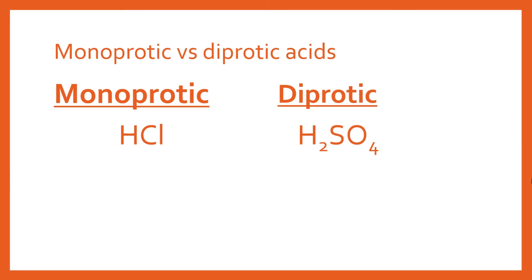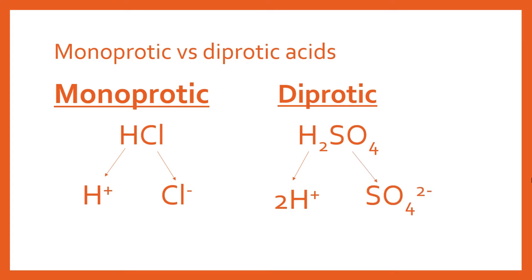A monoprotic acid could be something like HCl, your hydrochloric acid. When this ionizes, you're going to get one H⁺ and Cl⁻. The key is that you're only getting one H⁺ from each molecule. In a diprotic acid like sulfuric acid, you're going to get two H⁺ and then SO₄²⁻. It's important to remember that the SO₄ complex ion has a charge of two minus. So you can see the difference is that the diprotic acid is giving you double the number of H⁺ particles.